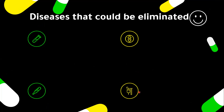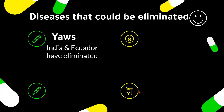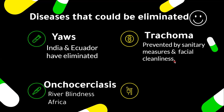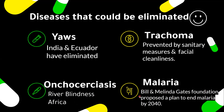Which diseases could be eliminated in specific regions of the world? First is yaws — India has already eliminated yaws, along with Ecuador. Second is trachoma, which can be prevented by sanitary measures and facial cleanliness. Third is onchocerciasis, also called river blindness, mostly confined to the African continent. Fourth is malaria, which is an ongoing elimination effort — the Bill and Melinda Gates Foundation has proposed a plan to end malaria by 2040.